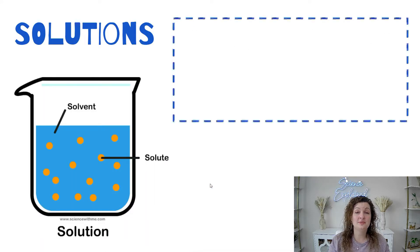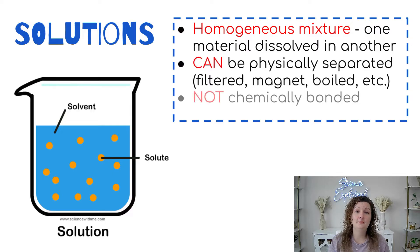What is a solution? A solution is a homogeneous mixture, which means it's dissolved and uniform throughout the whole solution. It can be physically separated in various ways, like using a magnet to get metal shards, filtering, or boiling. It is not chemically bonded, just a physical bond.